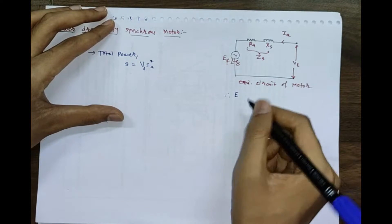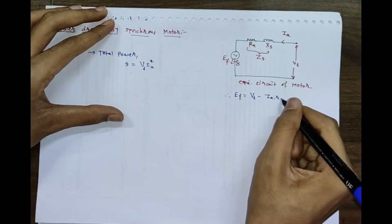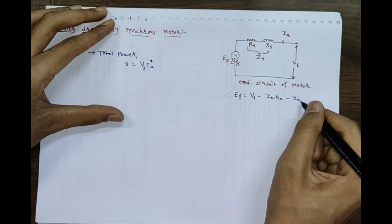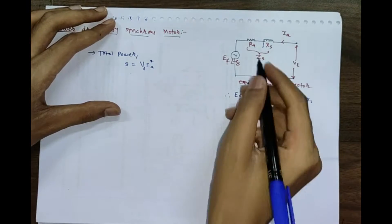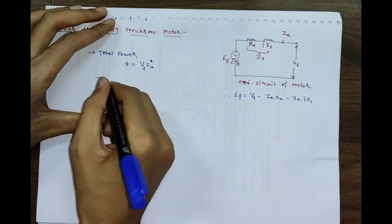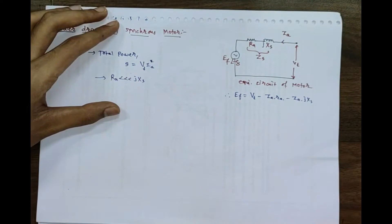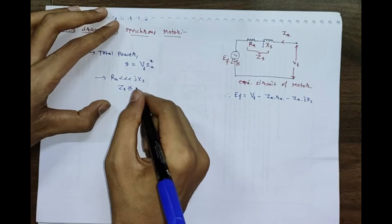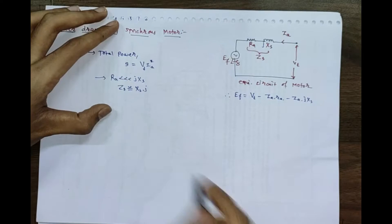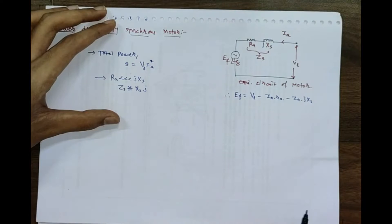Writing the equation: Ef = Vt − Ia·Ra − Ia·jXs. Many times the value of Ra is very much less than the value of the synchronous reactance Xs. That is why we rewrite Zs as equivalent to only Xs — we are not considering Ra. Most of the time, power system engineers replace the impedance term with only jXs, omitting Ra.